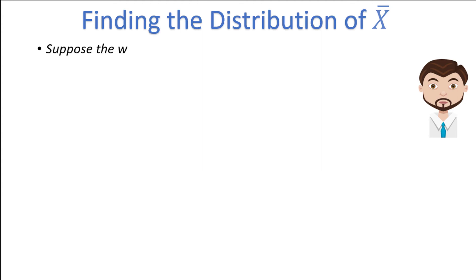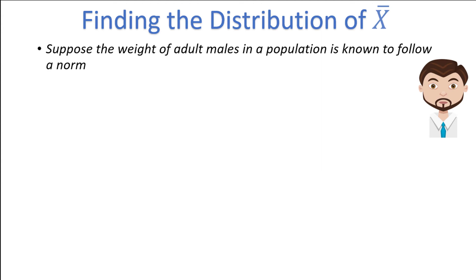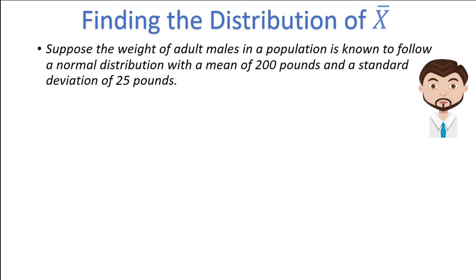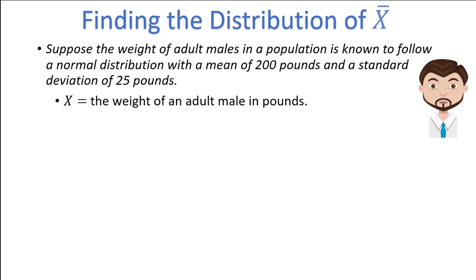Suppose the weight of adult males in a population is known to follow a normal distribution with a mean of 200 pounds and a standard deviation of 25 pounds. If we let x equal the weight of an adult male in pounds, then x is normally distributed with a mean of 200 and a standard deviation of 25.